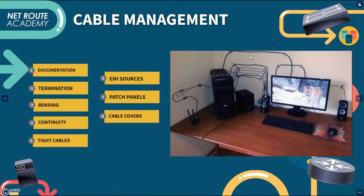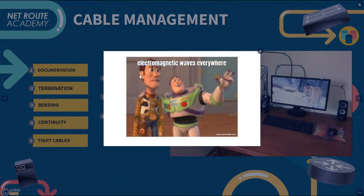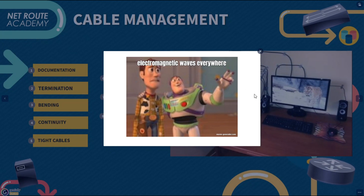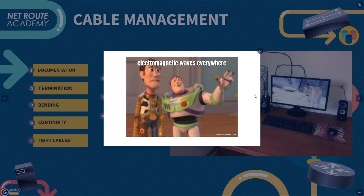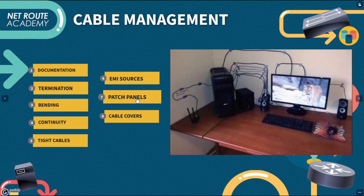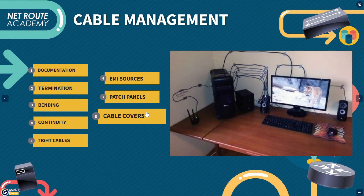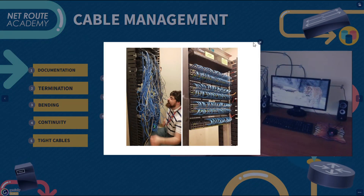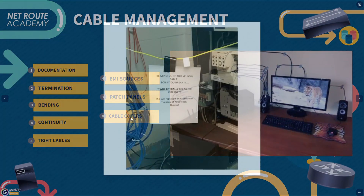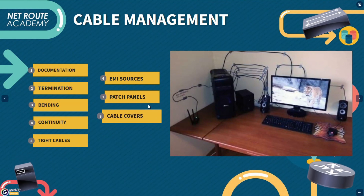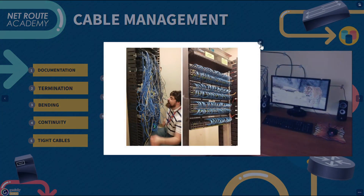Next is electromagnetic interference or EMI sources — make sure installed cables are at least three feet away from fluorescent lights or any EMI sources, such as power lines, televisions, copiers, or anything with electrical activity. Finally, use patch panels to organize and connect lines, and use cable trays for cable management to secure your cables in place.